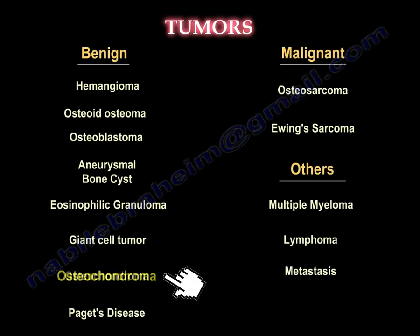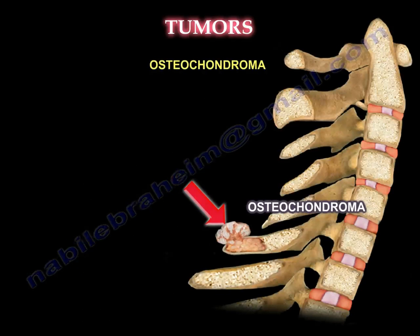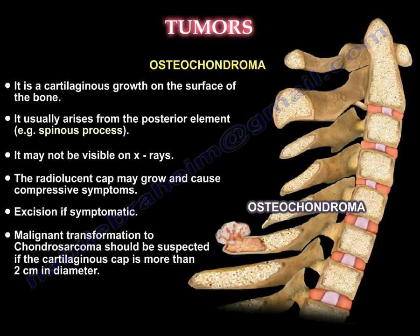Osteochondroma, or exostosis, is a cartilaginous growth on the surface of the bone that usually arises from the posterior element of the spine, for example the spinous process. It may not be visible on X-rays. The cartilaginous radiolucent cap may grow and cause compressive symptoms. Treatment is excision if symptomatic. Malignant transformation to chondrosarcoma should be suspected if the cartilaginous cap is more than 2 cm in diameter.